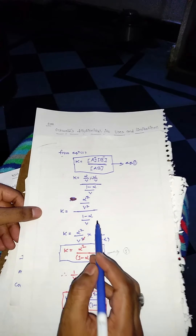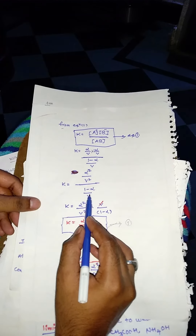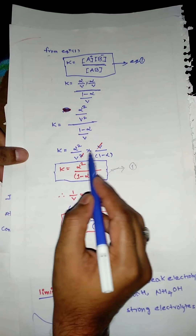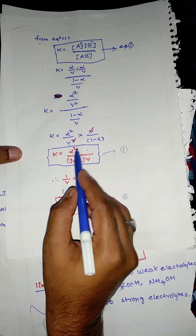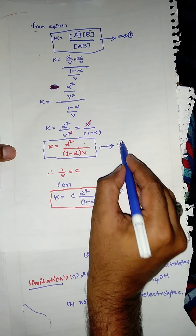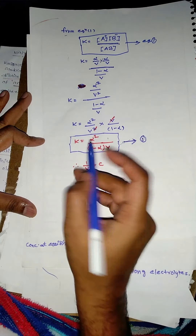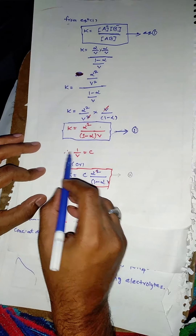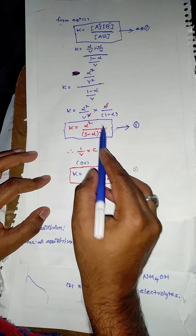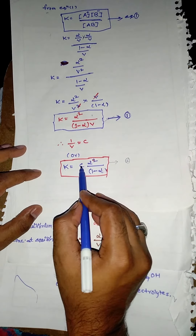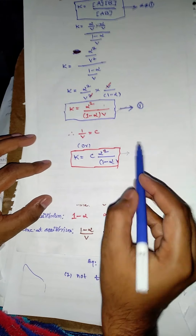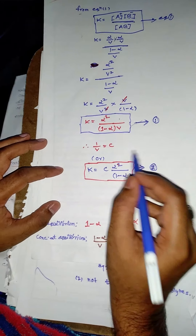Simplifying, the denominator V goes to the numerator: K = α² / [(1 − α) · V]. This is the Ostwald dilution law equation. Since 1/V = C, substituting gives K = Cα² / (1 − α). This is the second form of Ostwald dilution law.